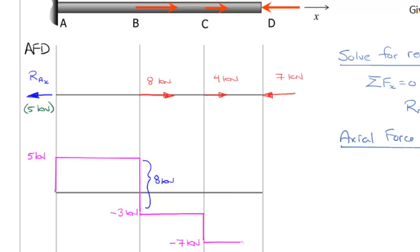And that remains constant until we get to the end at D. We see the 7 kN brings us back up to 0, which is what we would expect. If we didn't come back up to 0, we would know that we had made a mistake somewhere along the way. I'll just label this here as 4 kN.